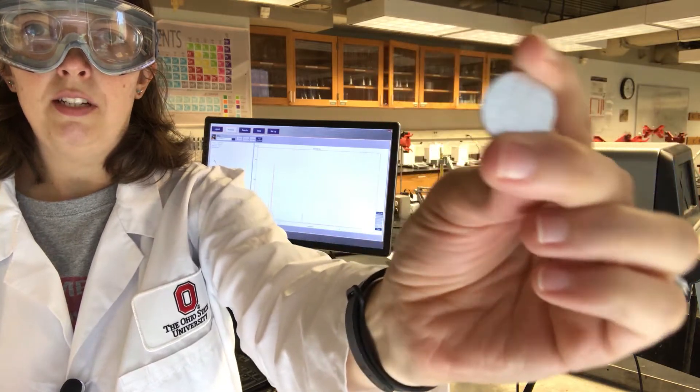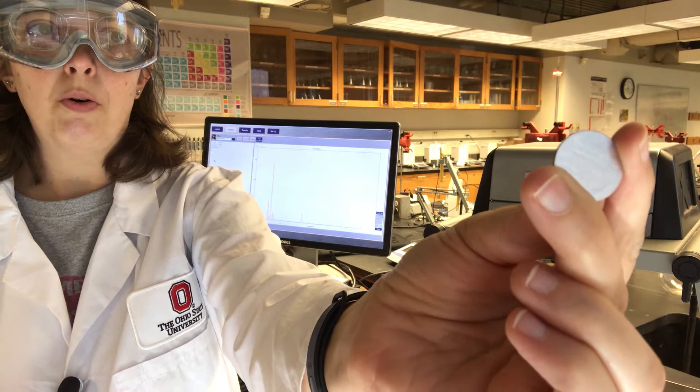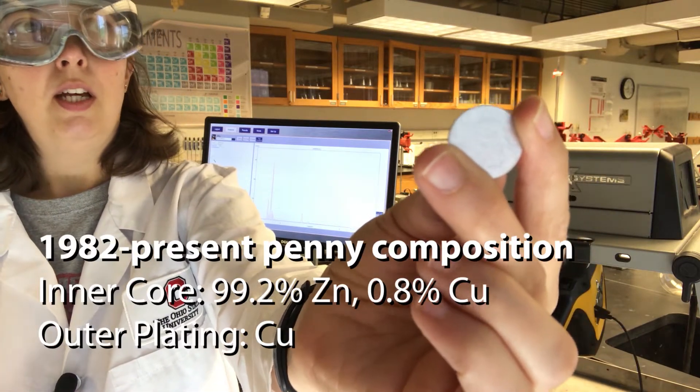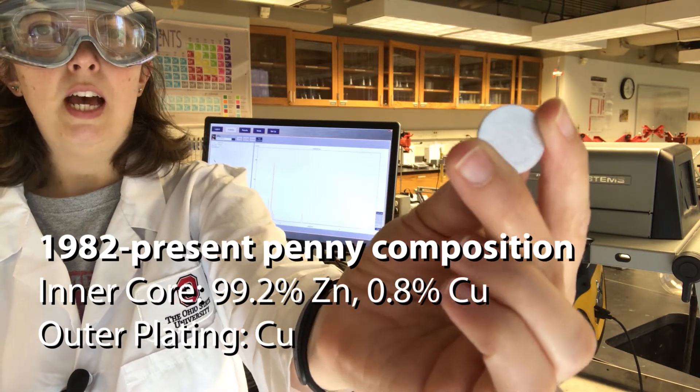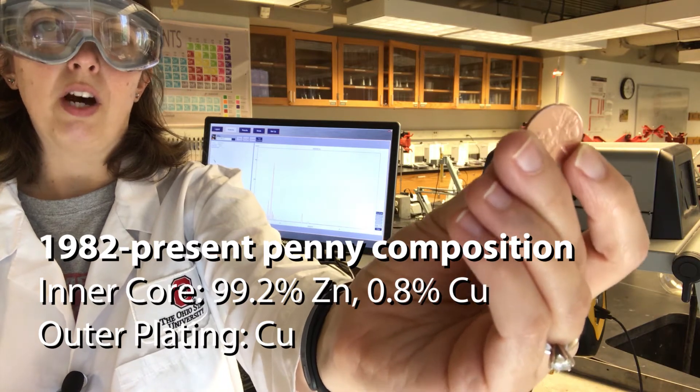The other side I've sanded down so you can see the inner core of the penny. Pennies made in 1982 and onward have this inner core. We'll see what that's made of. It's coated with copper.